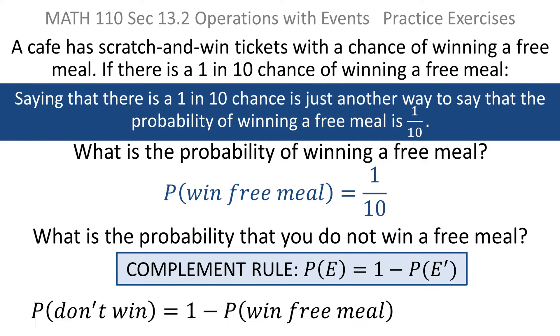So, the probability of not winning a free meal is 1 minus the probability of winning a free meal. The probability of winning a free meal, we've already determined, is 1 tenth. So, the probability that we don't win a free meal is 9 tenths.